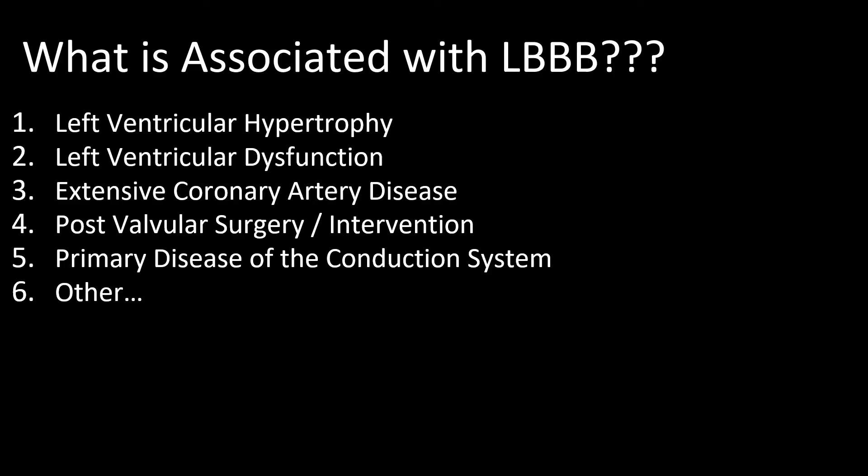Here are some of the associated abnormalities with left bundle branch block. They include left ventricular hypertrophy, left ventricular dysfunction, extensive coronary artery disease, post-valvular surgery or valvular intervention states — especially the aortic valve — or primary disease of the conduction system. There are other causes and associations as well.